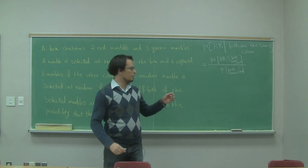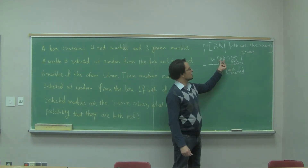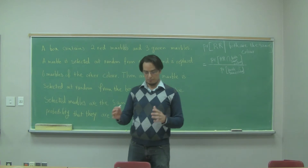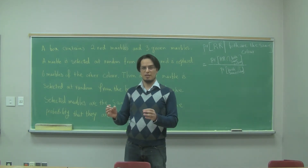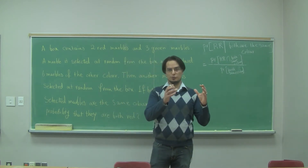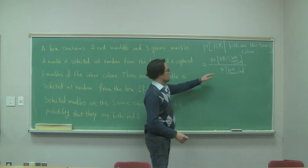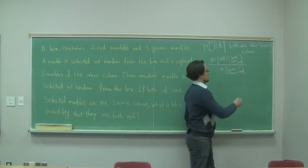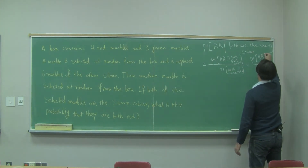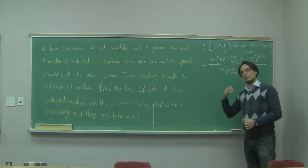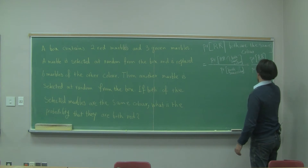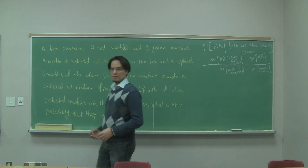Before going ahead, notice that the intersection of 'both red' and 'both same color' simplifies to just 'both red,' because 'both same color' has two pieces: both red and both green. So the intersection of 'both red' with 'both same color' is just 'both red.' The denominator, 'both same color,' covers either both green or both red.